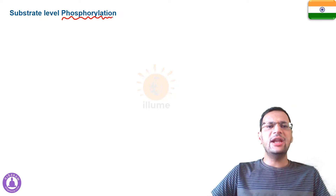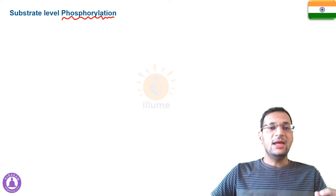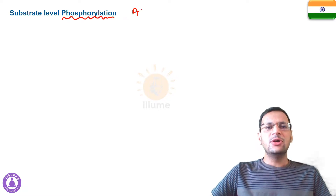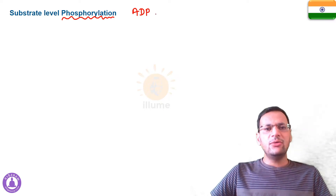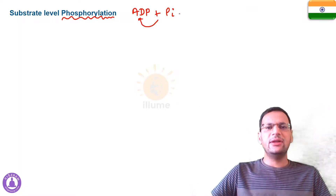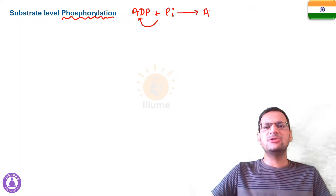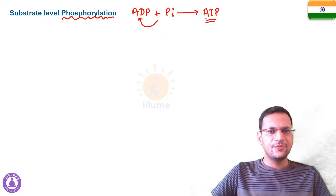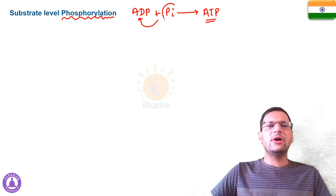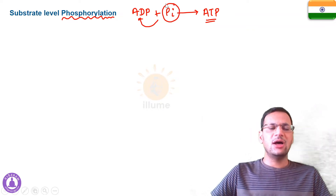Phosphorylation is the addition of phosphate. In biological systems, this word is used for the formation of ATP. When an inorganic phosphate is attached to adenosine diphosphate (ADP), it becomes ATP — adenosine triphosphate — the energy molecule of the cell. The source of that inorganic phosphate is what matters.